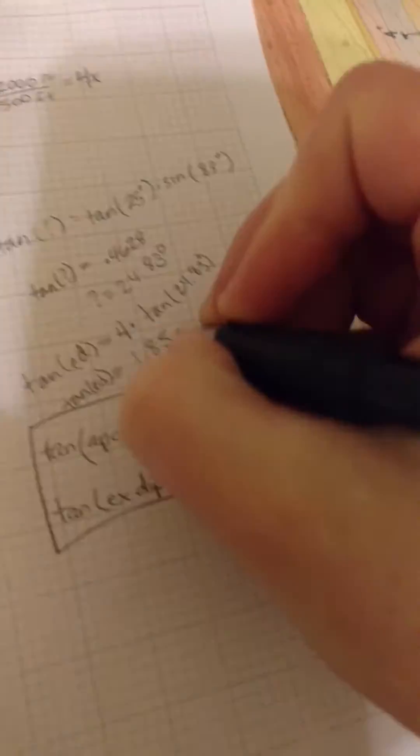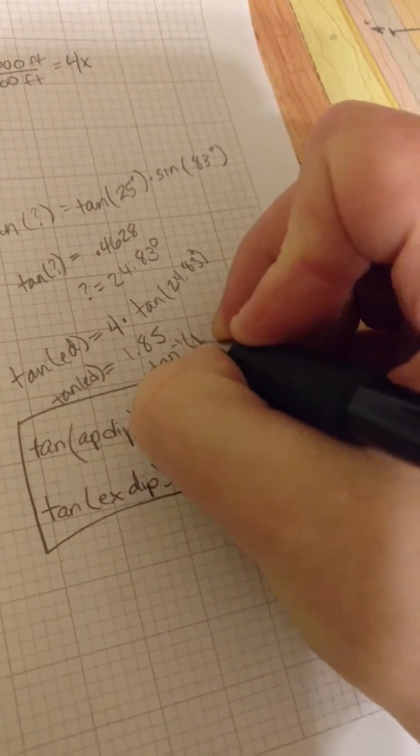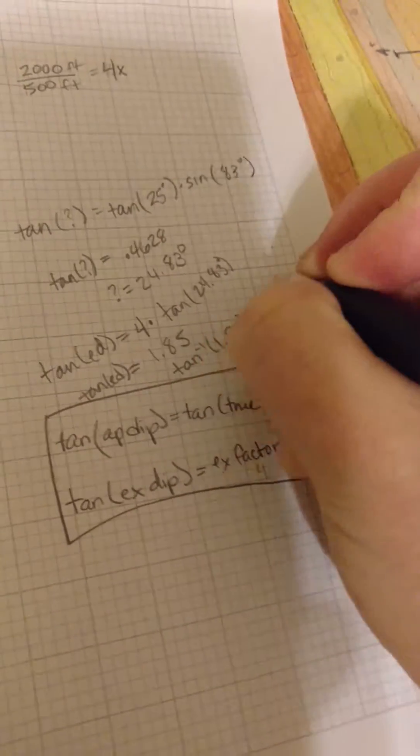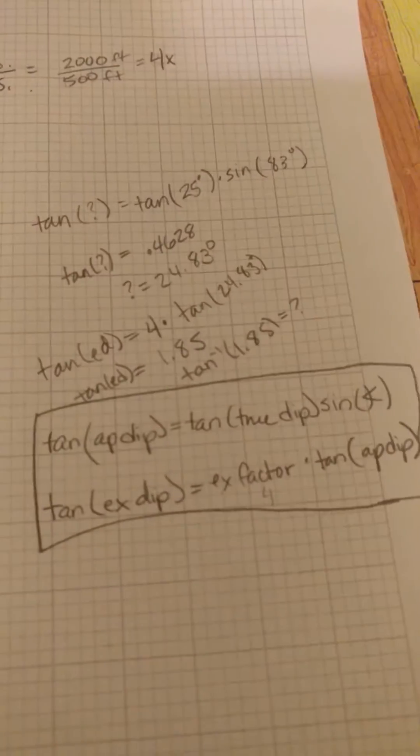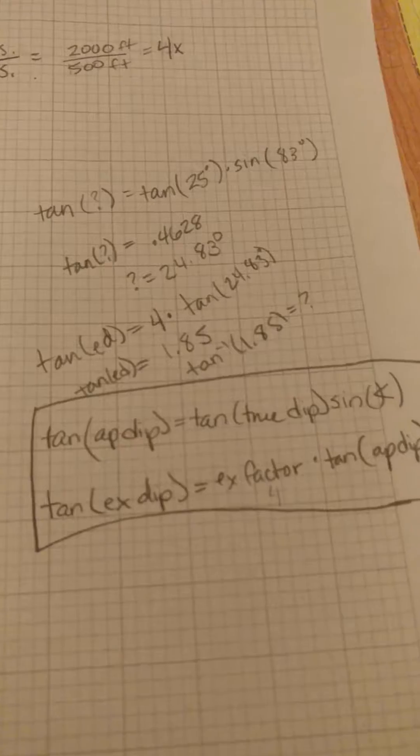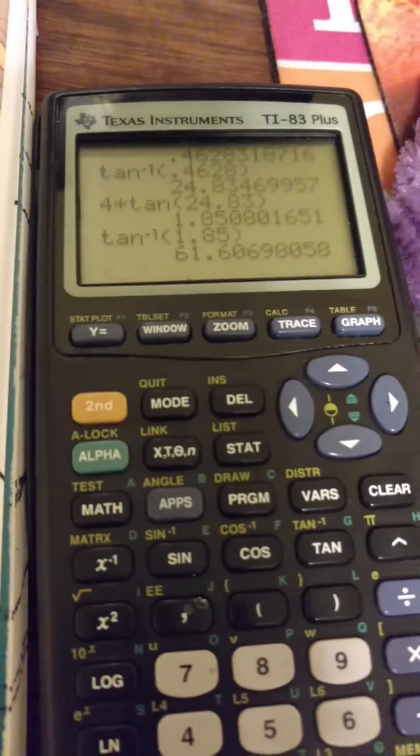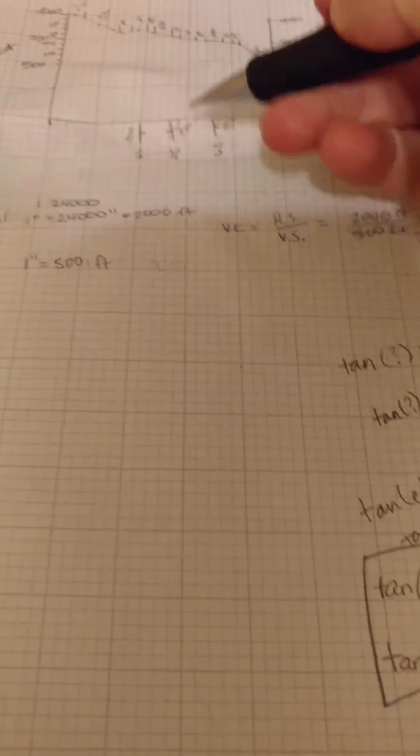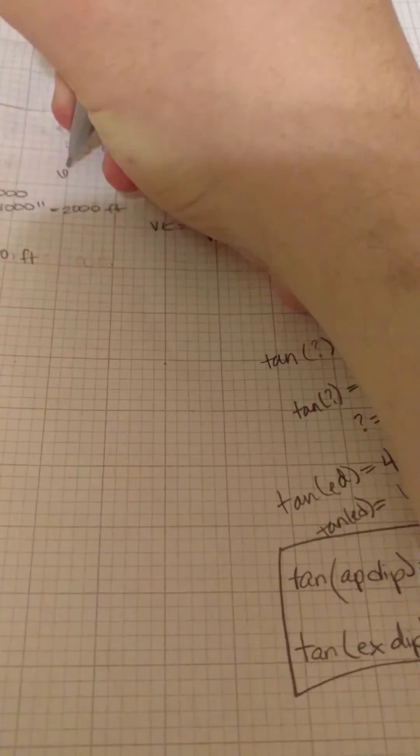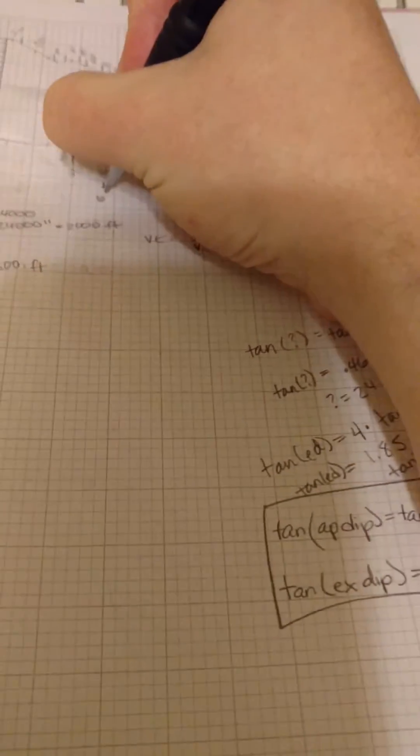So we'll do inverse tangent of 1.85 is 61.6 degrees, which is obviously really different than 25 degrees. So we're going to draw this as about 62 degrees, 61.1 degrees. Now, I'll figure out this one here in a minute, but let's just talk about this guy for a second.